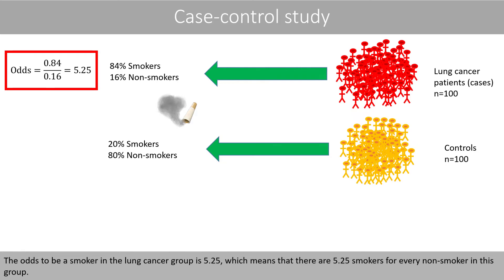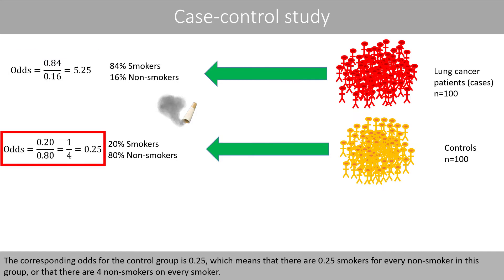which means that there are 5.25 smokers for every non-smoker in this group. The corresponding odds for the control group is 0.25, which means that there are 0.25 smokers for every non-smoker in this group, or that there are 4 non-smokers for every smoker.